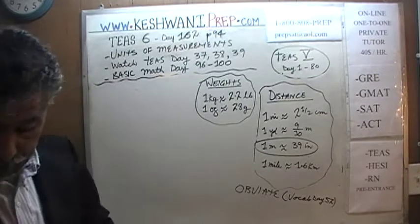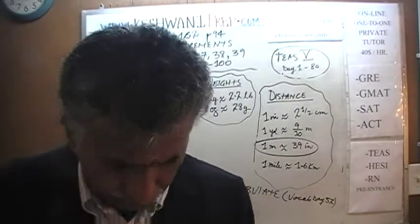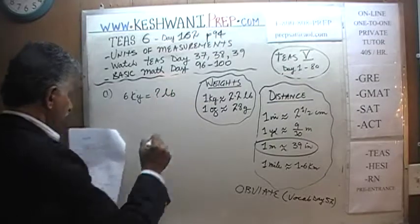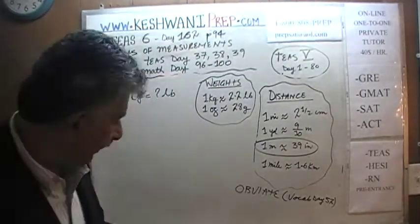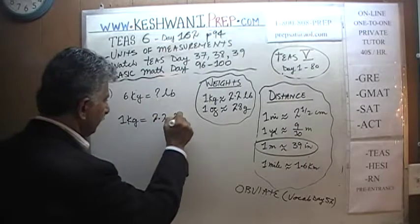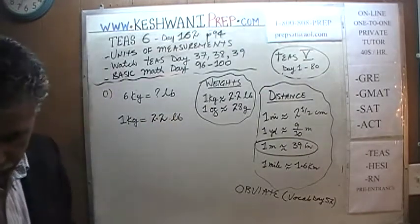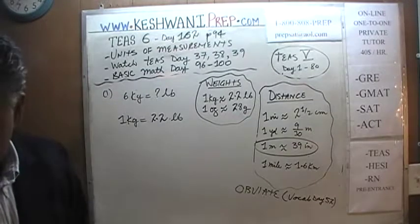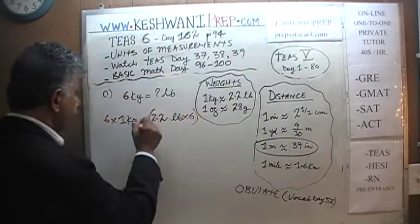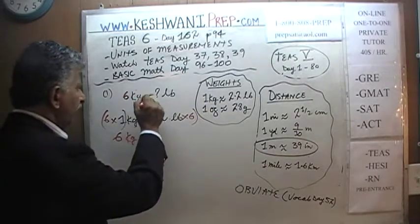There are two problems. Problem one: we are asked to convert six kilograms into pounds. We know that one kilogram equals 2.2 pounds — we memorized it. Since we want six kilograms, not one, we multiply both sides of the equation by six. Six times one is six kilograms.